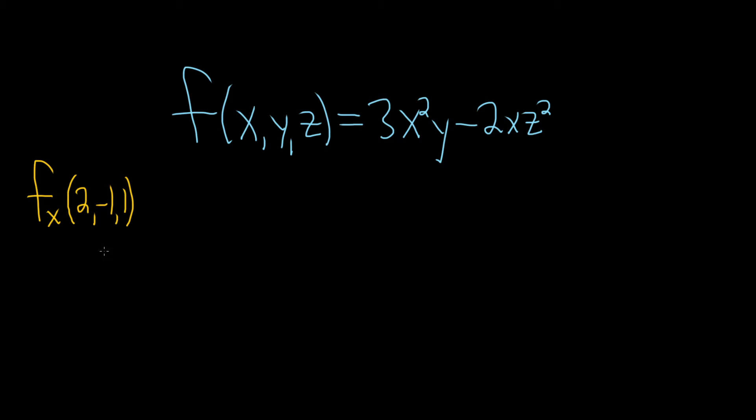Hi everyone, in this problem we have a function of three variables, and we're being asked to find the partial derivative with respect to x, and evaluate it at the point 2, negative 1, 1.